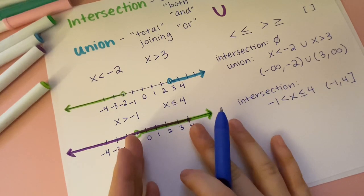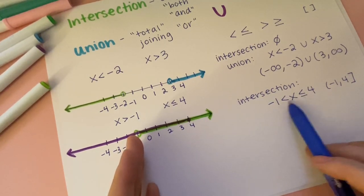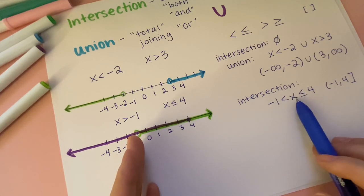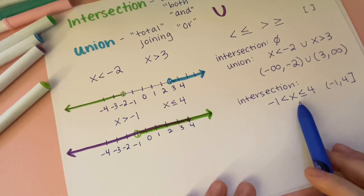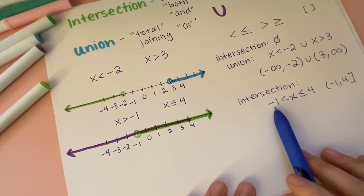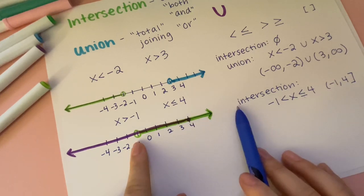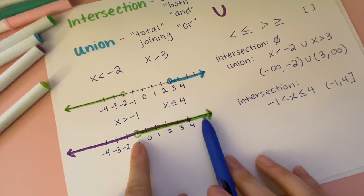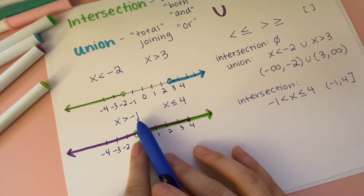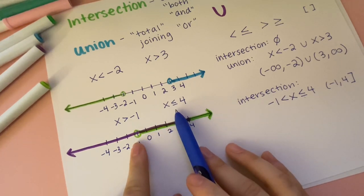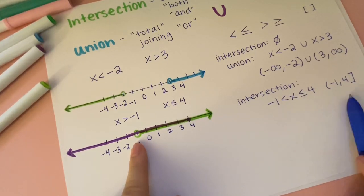For the intersection, we want all numbers that are both greater than negative one AND less than or equal to four — what is both purple and green. That gives us the interval from negative one to four: open at negative one, closed at four. Written as a chain: negative one < X ≤ four, or in interval notation (−1, 4]. If I pick zero, it is both greater than negative one and less than or equal to four. If I pick ten, it's not less than or equal to four, so it doesn't belong.